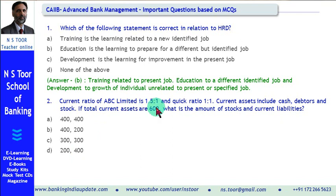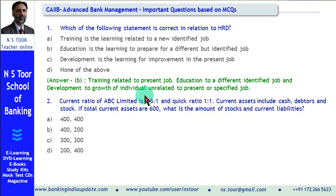To solve this question, we first calculate the amount of current liabilities. If the current ratio is 1.5:1 and current assets are 600, then current liabilities = 600 divided by 1.5 = 400. Now since the quick ratio is 1:1, this means quick assets are also equal to the current liabilities, so quick assets = 400.